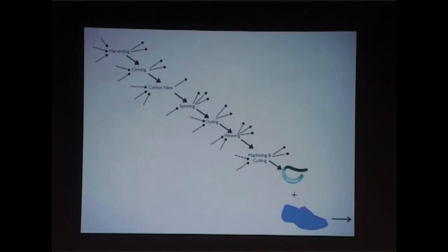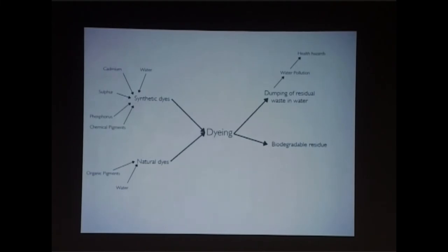We didn't just stop at finding out the processes. We went ahead in finding out what a certain process involves, right from the inputs to the outputs. I'll give you one example: dyeing. We went in depth at each topic. How do you dye fabric? It's either synthetically dyed or naturally dyed. How is it synthetically dyed? You use cadmium, sulfur, phosphorus, all kinds of chemical pigments. If it's naturally dyed, it's organic pigments plus water. If it's synthetically dyed, there are repercussions. Because of the chemical residue that's left, it can cause water pollution and health hazards. It's not good for health.